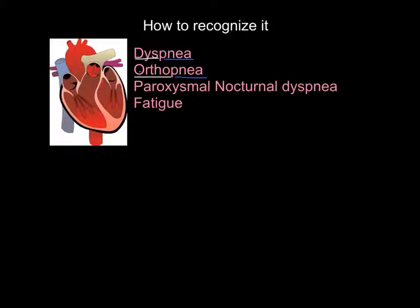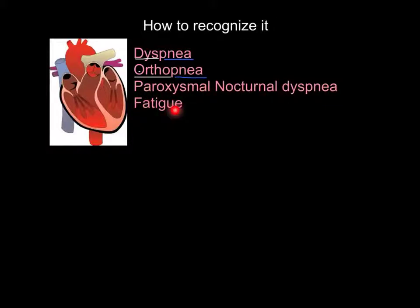Paroxysmal nocturnal dyspnea is bad breathing at night that comes on very suddenly. General fatigue, as you'd imagine, comes from the fact that there's not enough oxygenated blood being circulated to the tissues to meet their metabolic needs, as described in the definition.